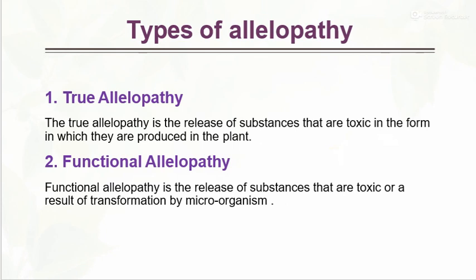Types of allelopathic chemicals: true allelopathic and functional allelopathic. True allelopathic refers to the release of substances that are toxic in the form in which they are produced in the plant — a direct toxic effect from plant to plant. Functional allelopathic refers to the release of substances that become toxic through transformation by microorganisms.